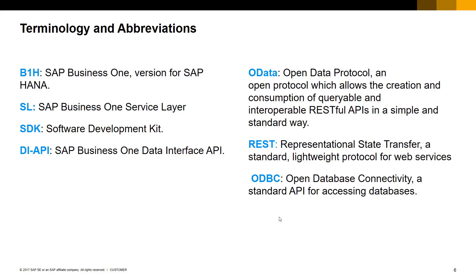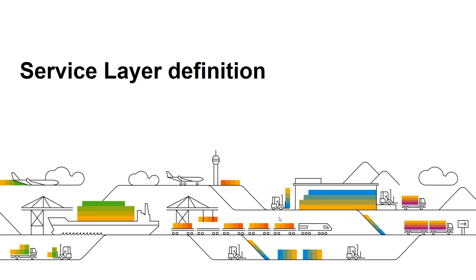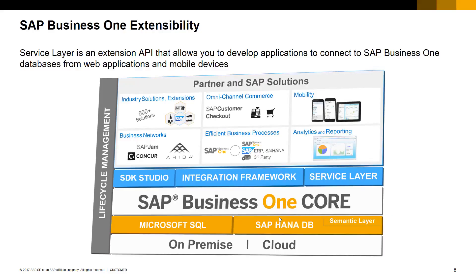More details can of course be found by searching those terms on the internet. Let's now start with the definition of the SAP Business One Service Layer. Those of you who have already developed SAP Business One extensions have already seen this picture representing SAP Business One Extensibility Blocks. On the lower level, we can see SAP Business One Core can run in on-premise and also cloud environments, as well as on top of Microsoft SQL Server and SAP HANA databases. On top of the SAP Business One Core, three blue blocks represent the framework, APIs and tools available to extend SAP Business One Core functionality.